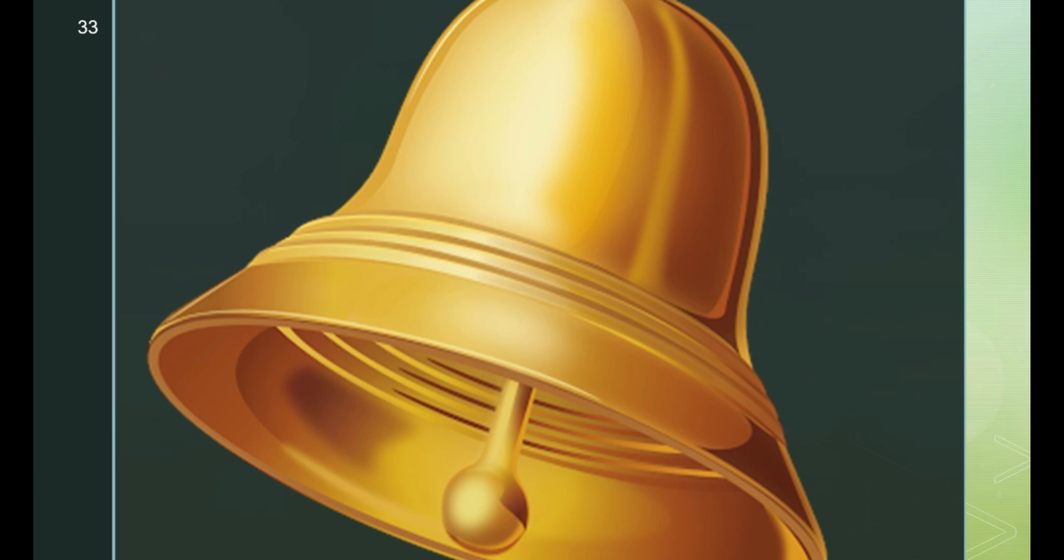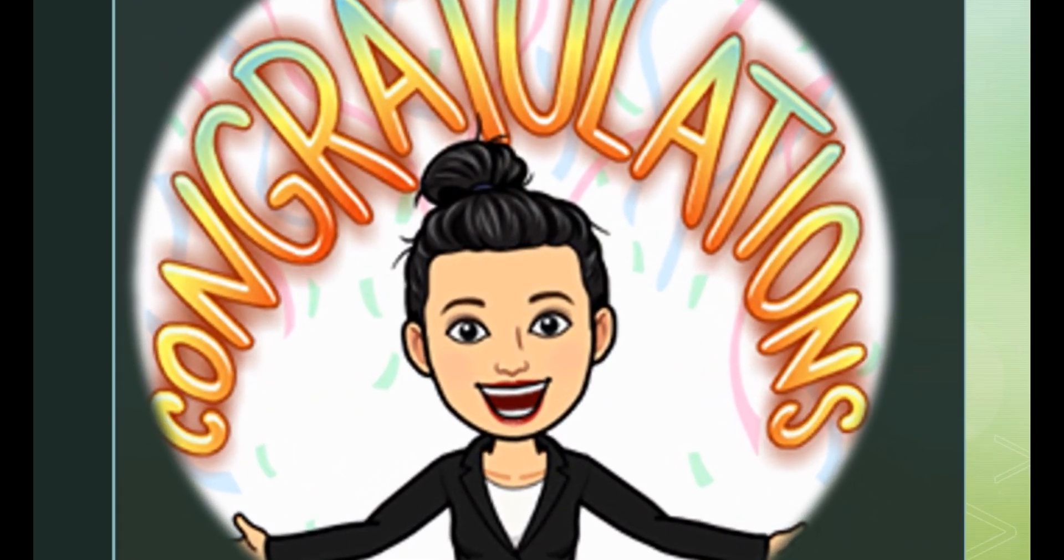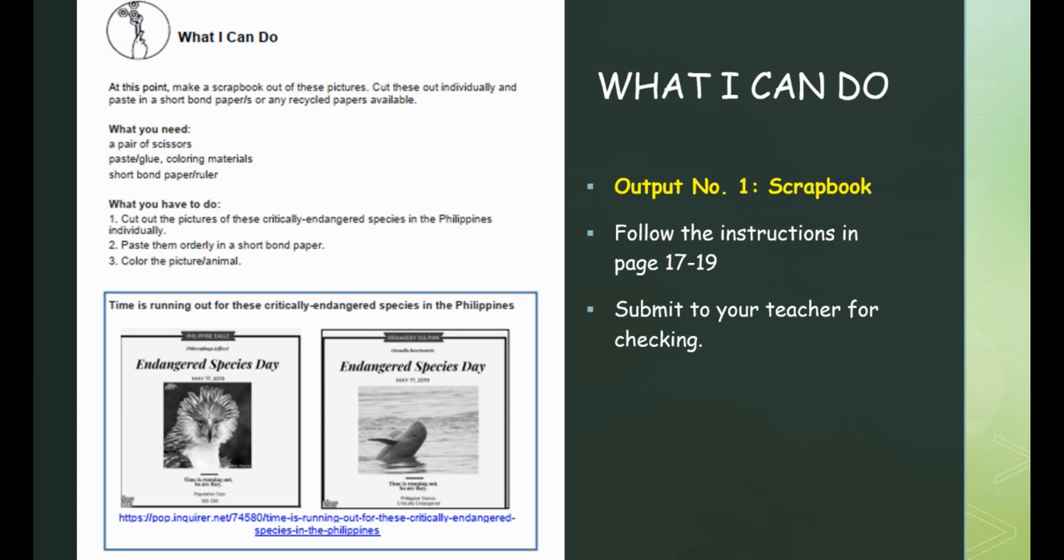Congratulations! Now you know all about biodiversity. To make sure that you apply the lessons you just learned, I want you to do the remaining activities on this module. Go to page 17 to 19 of your modules. What I can do. Make a scrapbook out of the pictures. Cut these out individually and paste in a short bond paper or any recycled paper available. You would need a pair of scissors, glue, coloring materials, and short bond papers. Cut out the pictures of these critically endangered species in the Philippines individually. Paste them orderly in a short bond paper. Color and decorate your work. This will be your output number one for quarter one. Submit your scrapbook to your teacher for checking.